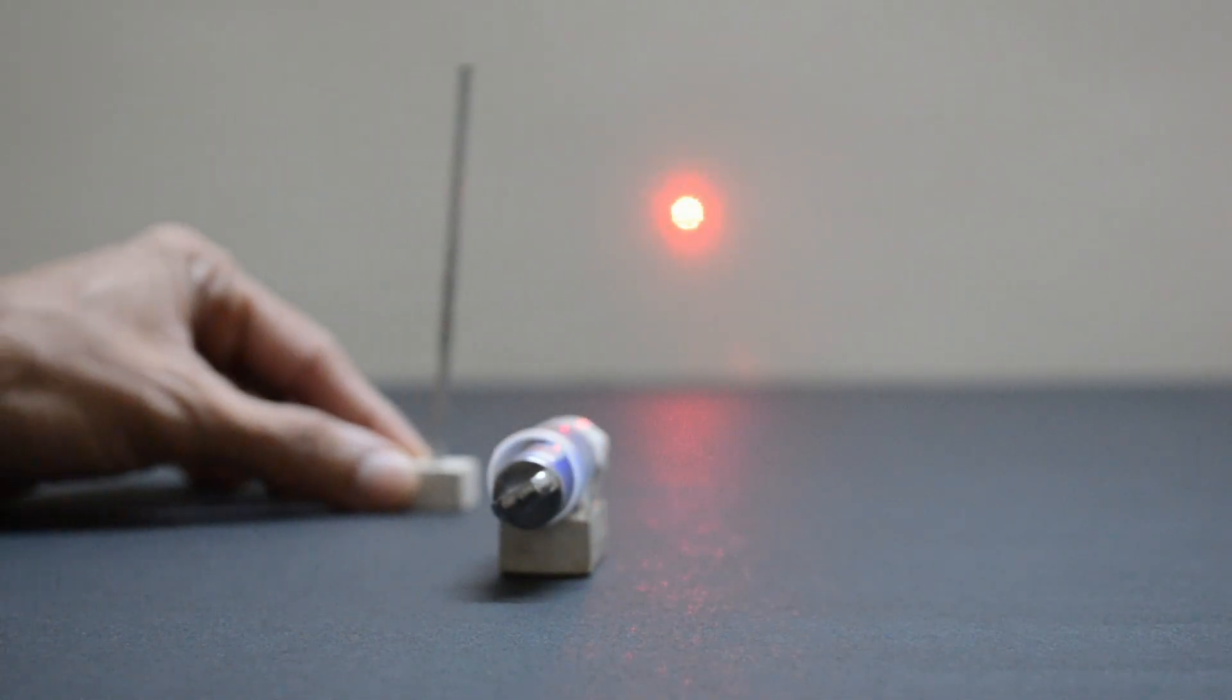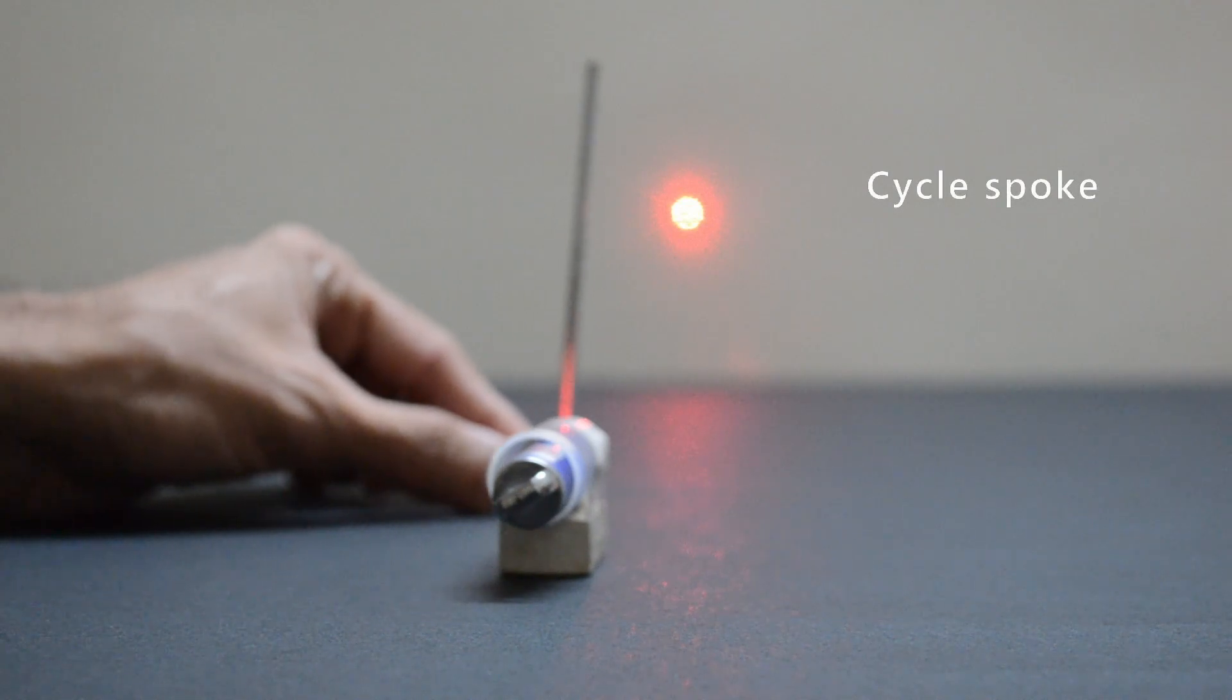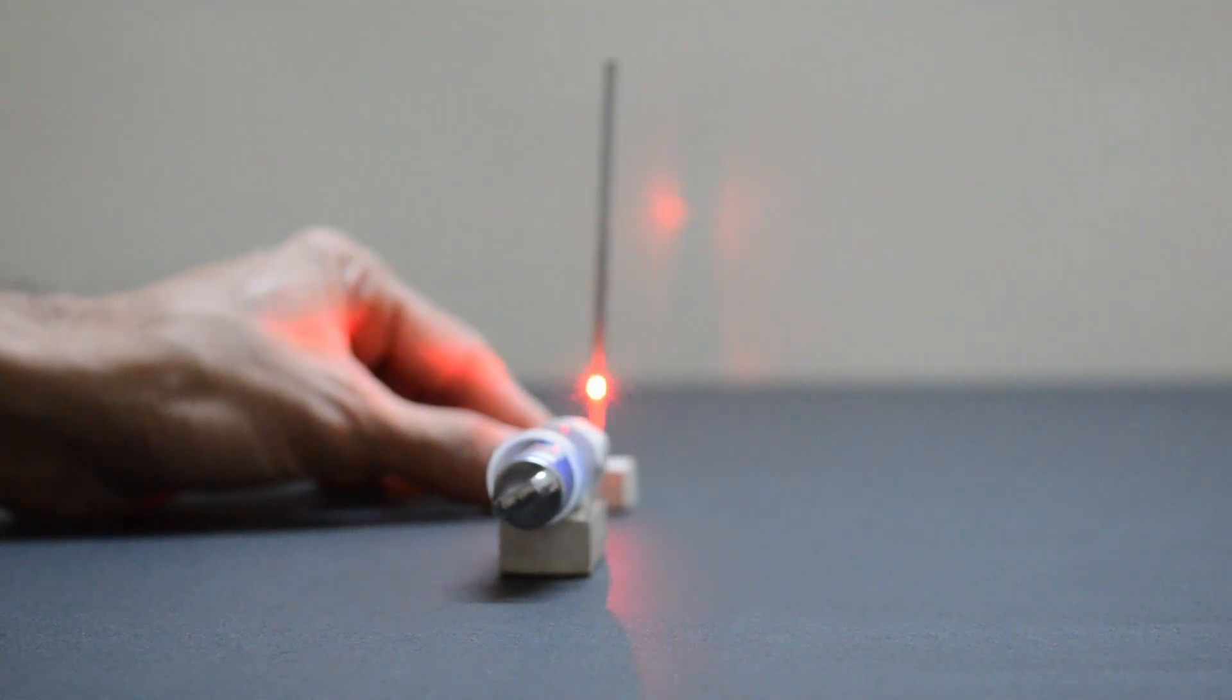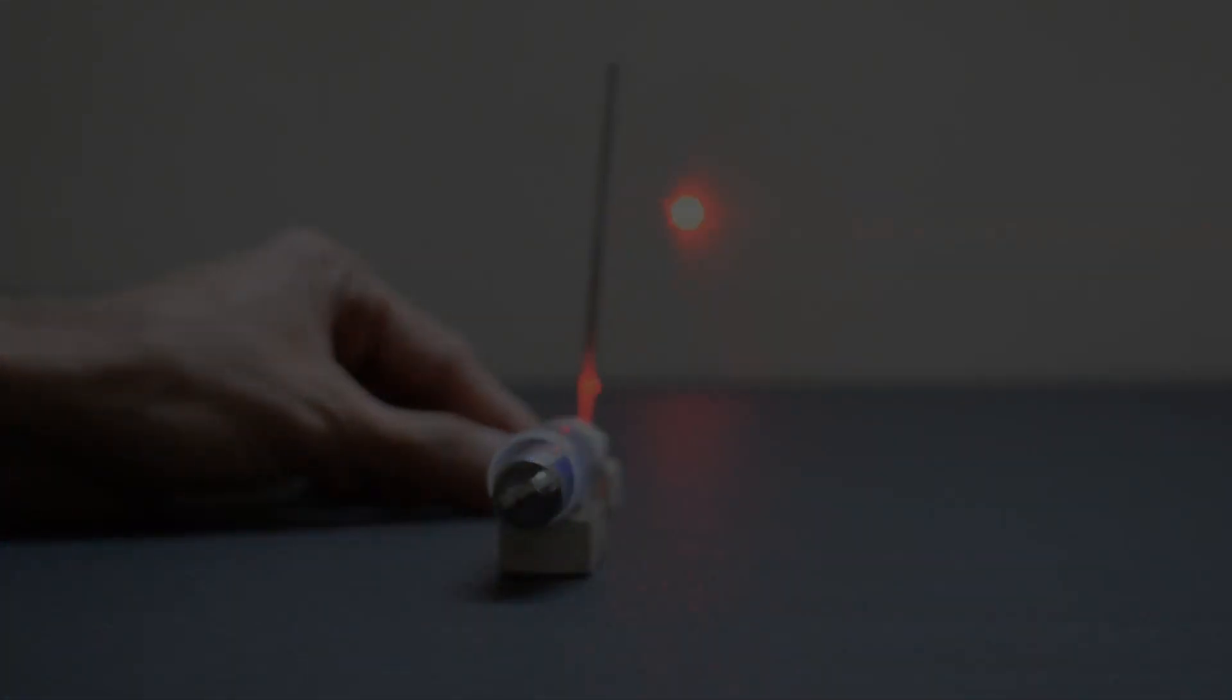What if I bring a thick cycle spoke in between? It partially blocks the light. Let us dim the external light so that we can see it better. We can see the shadow of the spoke on the screen.